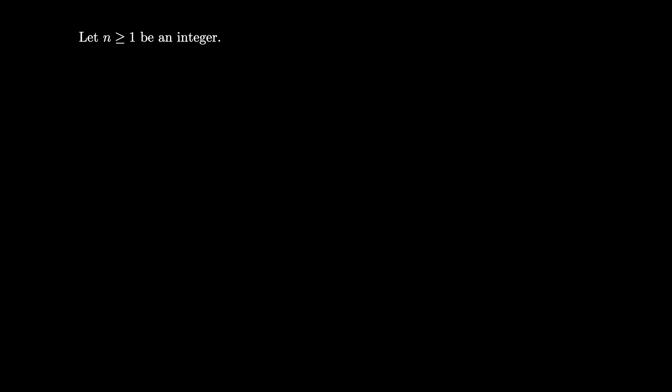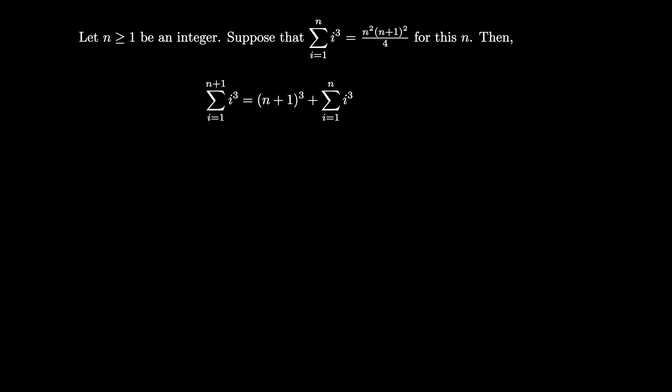For our inductive proof of the first formula, we let n be an integer greater than or equal to 1. Suppose that we have the sum we want for this n — that is, the sum where i ranges from 1 to n of i cubed equals n squared times (n plus 1) squared divided by 4 for this particular n value. Then we look at the corresponding sum for the next integer n plus 1: the sum where i ranges from 1 to n plus 1 of i cubed equals (n plus 1) cubed plus the sum where i ranges from 1 to n of i cubed. This latter sum is exactly the sum from our inductive hypothesis, so we can replace it with (n plus 1) cubed plus the quantity n squared times (n plus 1) squared divided by 4.